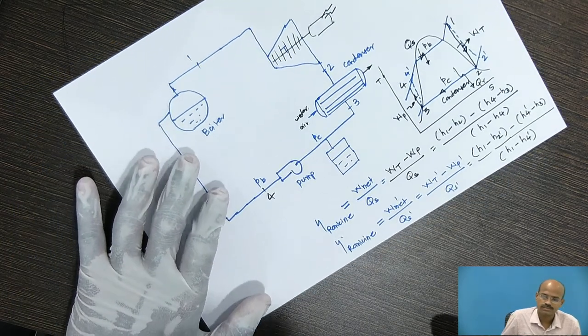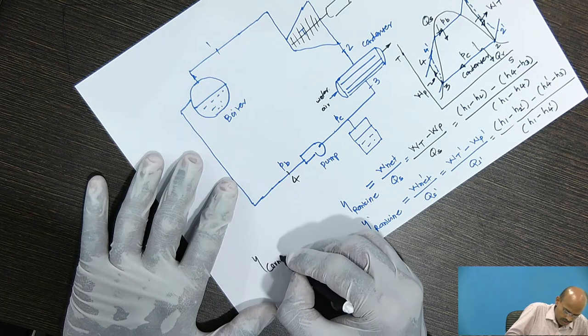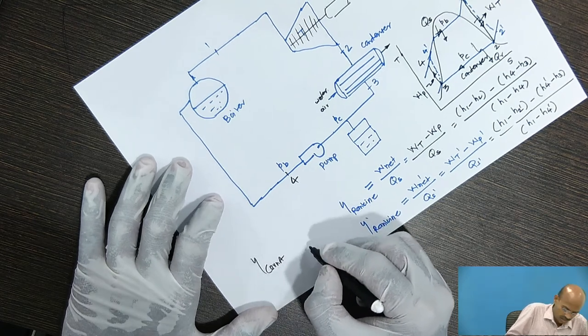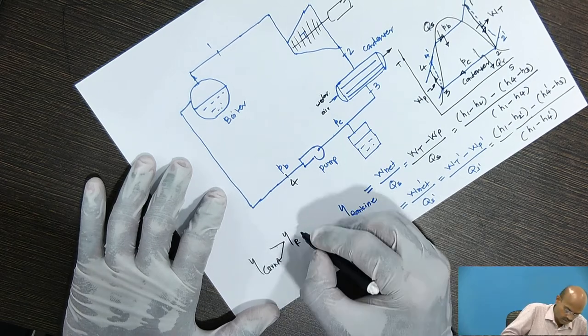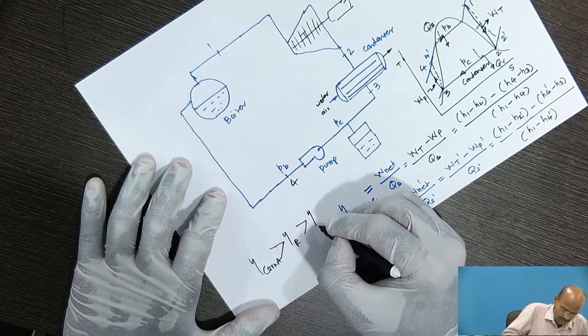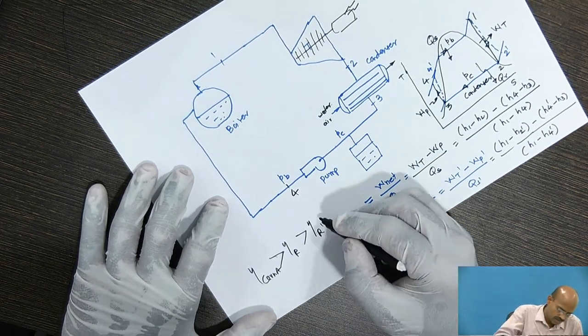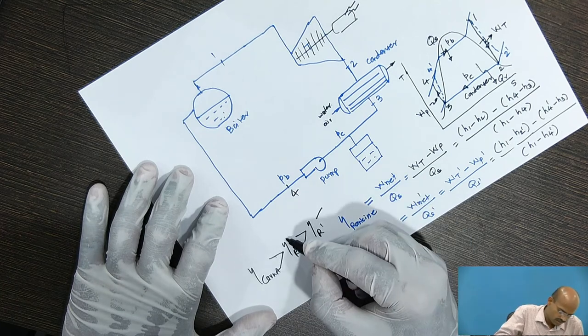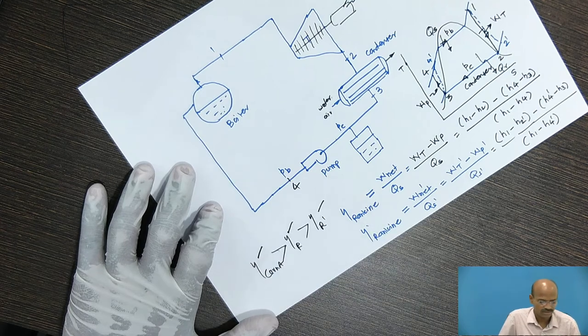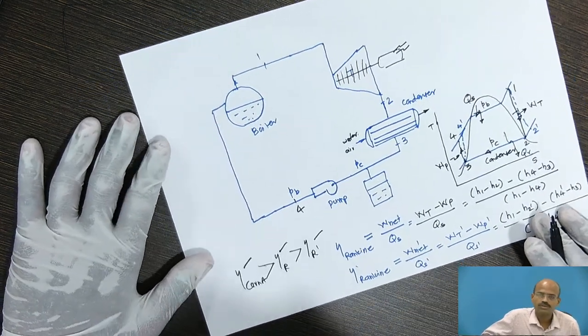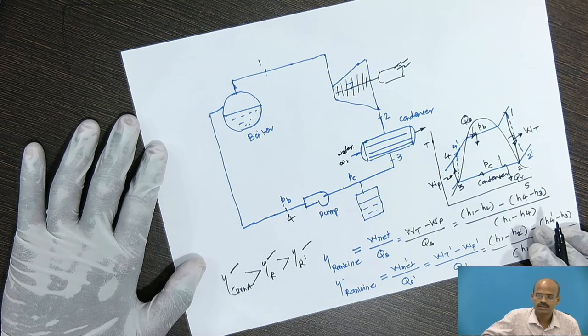You will find that after solving the numericals, the Carnot efficiency is greater than theoretical Rankine efficiency, which is greater than actual Rankine efficiency. And this is practical cycle, this is theoretical cycle and this is imaginary cycle. So, this was all about vapor power cycle that is nothing but Rankine cycle.